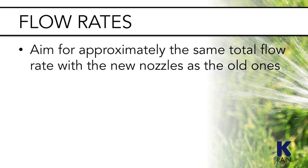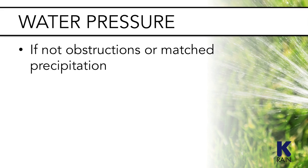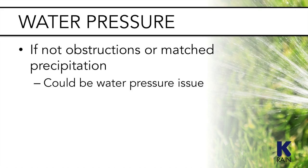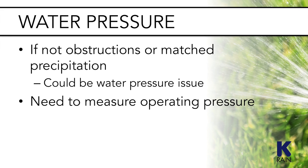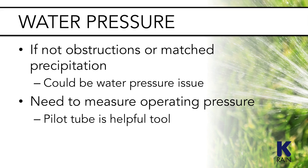If obstructions or matched precipitation aren't the problem, there could be a water pressure issue preventing the sprinklers from delivering water evenly. To get an accurate reading, you'll need to measure the operating pressure. A pitot tube is a helpful tool — essentially a thin metal tube that can be inserted directly into the stream of a sprinkler and attached to a pressure gauge to give a quick reading on the operating pressure at the head.